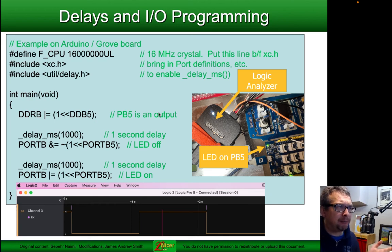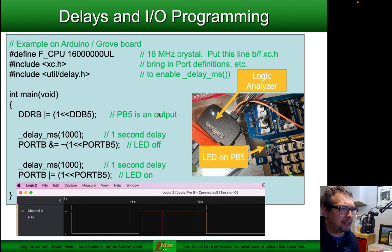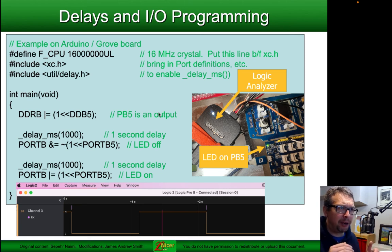Here's the main function. I set the data direction register for PB5 — bit 5 is going to be an output. I have a millisecond delay set to 1,000 milliseconds, so 1 second. Then I turn the LED off, then delay again for 1,000 milliseconds, and then I have the LED on using the bit shift operation. In the first case it's an AND, in the second it's an OR. This will turn it off and then on, and I'll be able to see it not only visually but also using the logic analyzer.